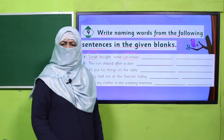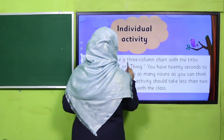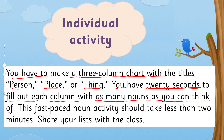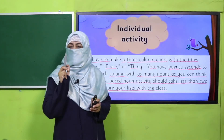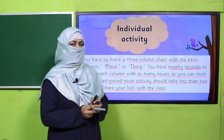My dear children, are you done? Good job! Here I have a very exciting activity for you. You have to make a three-column chart with the title: Person, Place, or Thing. Your teacher will assign you time — two minutes or five minutes — and you will fill each column with as many nouns as you can think of. This fast-paced noun activity should take less than two minutes. Share your list with your class. Let's see who writes the maximum nouns. Pause the video and enjoy the activity.